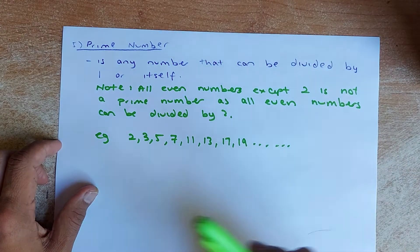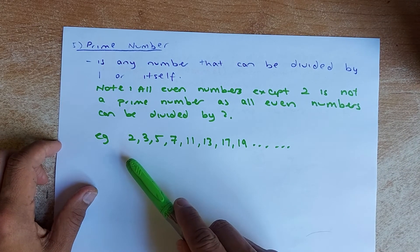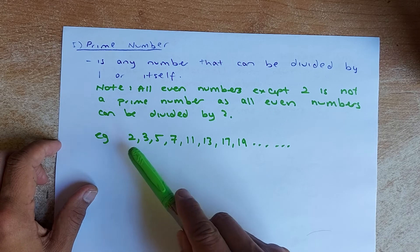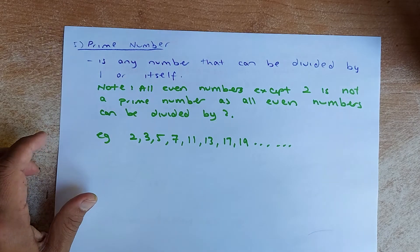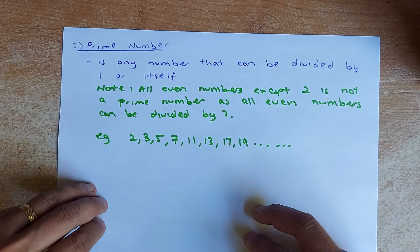So if the question asks you for prime numbers, always ignore all the even numbers. So we shall look at the prime numbers from 1 to 20. So the first prime number is 2, 3, 5. All these numbers can only be divided by itself or 1.